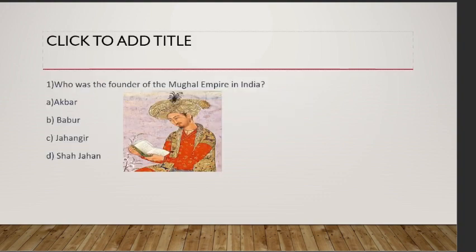First question: who was the founder of the Mughal Empire in India? Options are Akbar, Babur, Jahangir, or Shah Jahan. The answer is Babur. You can remember this by memorizing the famous Mughal emperors.